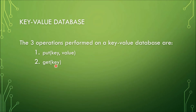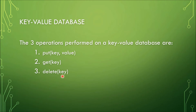The next operation is GET. GET returns the value for a given key if it exists — you pass a key and then you get the value with that associated key. The next operation is DELETE. DELETE removes a key and its value from the table if that key exists — you pass a key and once it is found, it removes the key and its value.